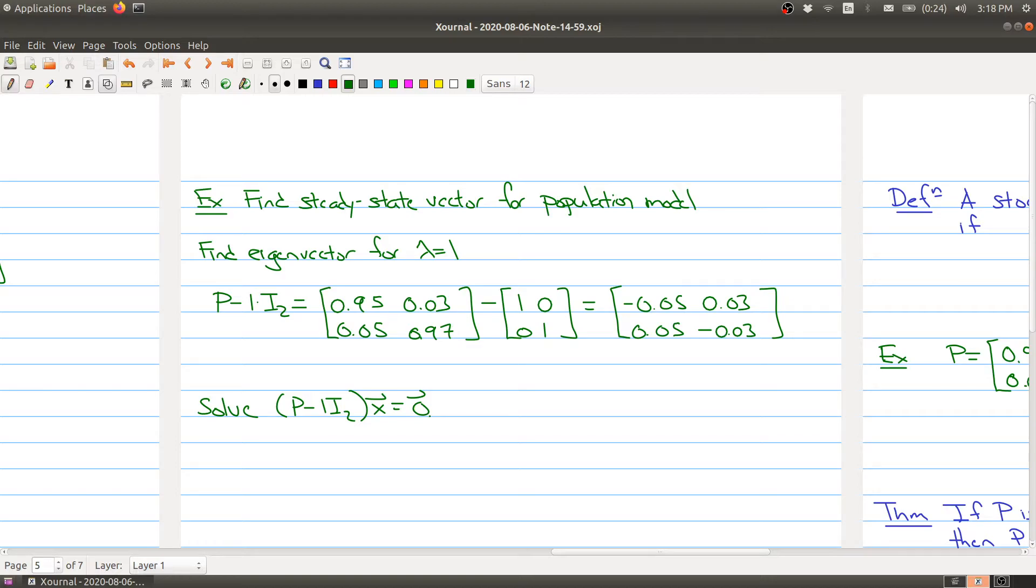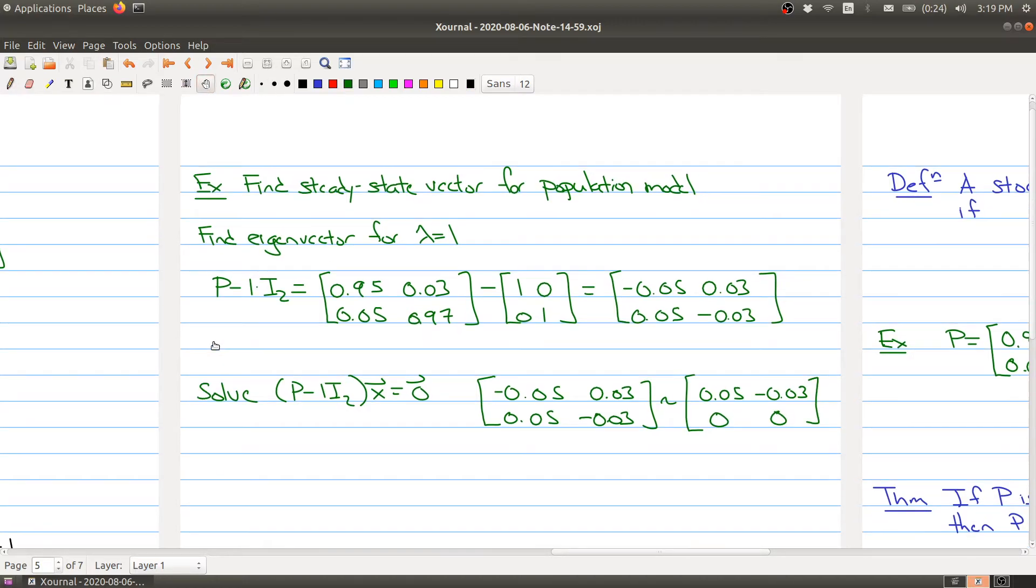Then we have to find all solutions to this system. And you can see that here, I'll just put the coefficient matrix. There's a lot of zeros here. Let me space things out a bit more. 0.03, 0.05, negative 0.03. That this is going to be the same as, or row equivalent to, 0.05, negative 0.03, 0, 0. And so we see that X2 is free.